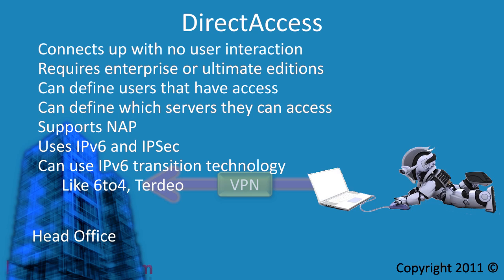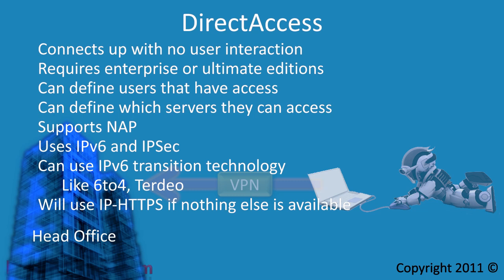If the transition technology does not work, which may be due to firewalls between you and the corporate network, direct access will use IP over HTTPS. HTTPS uses a very common port and should be open on most firewalls, and will also run over IP version 4 networks.